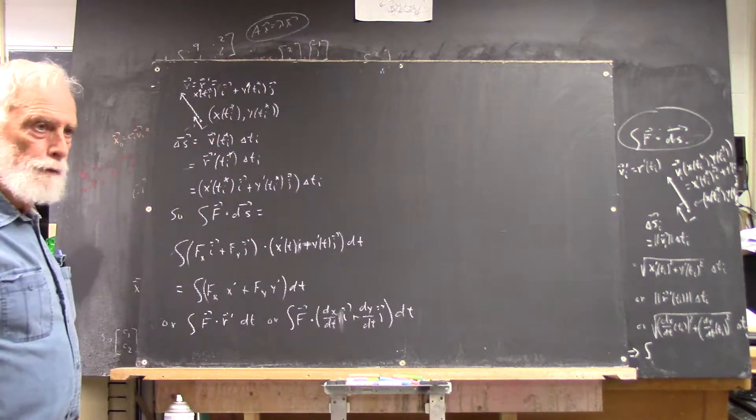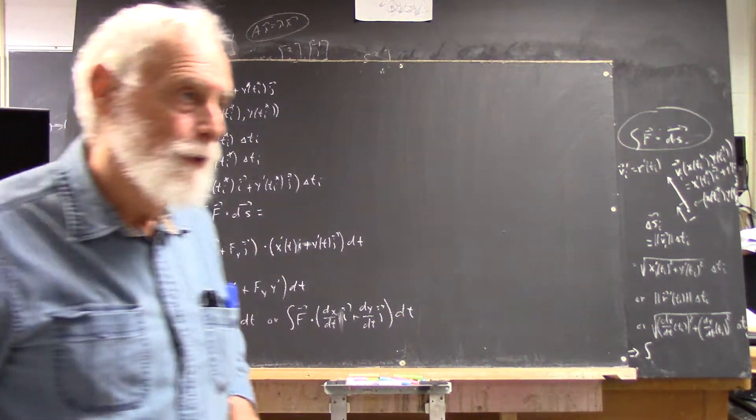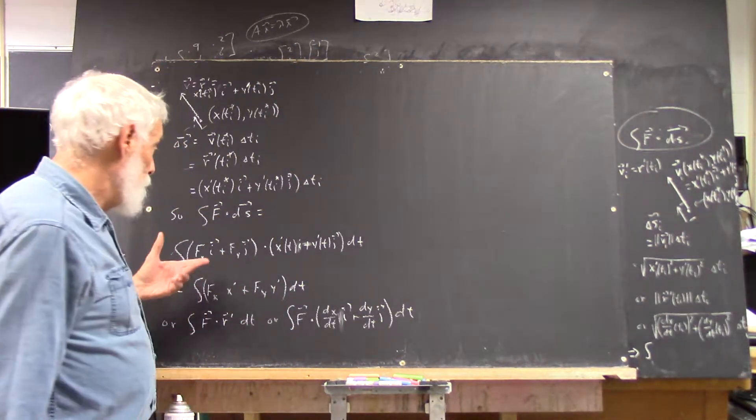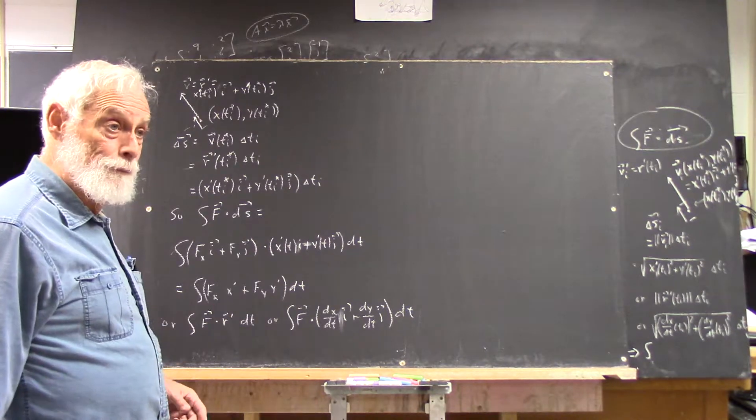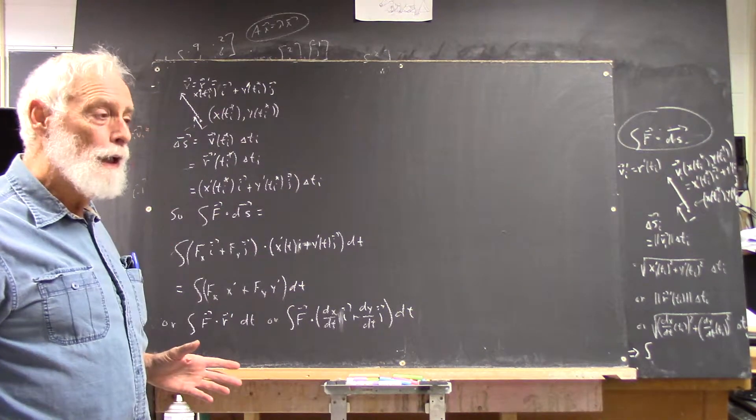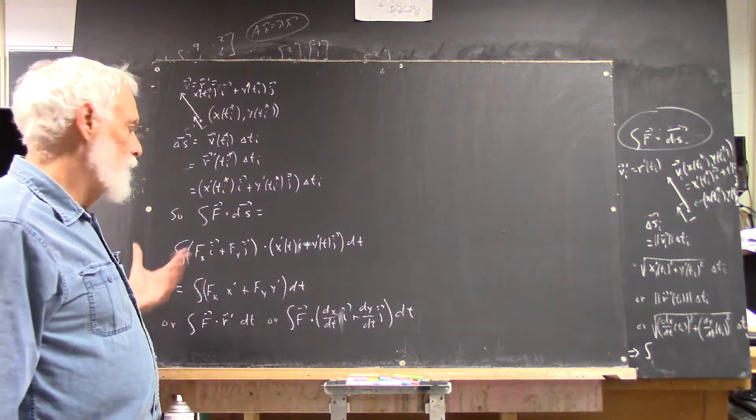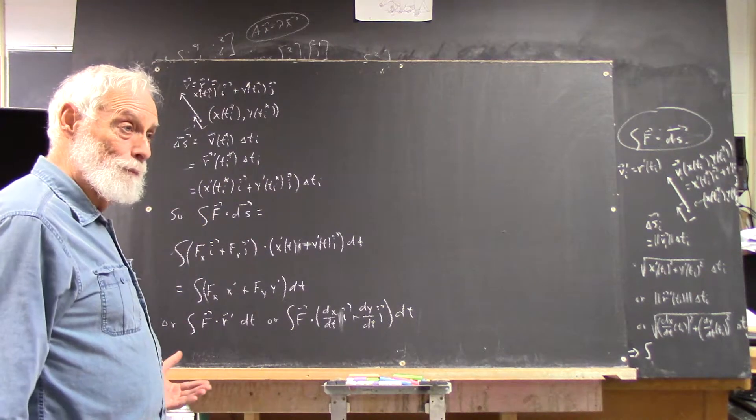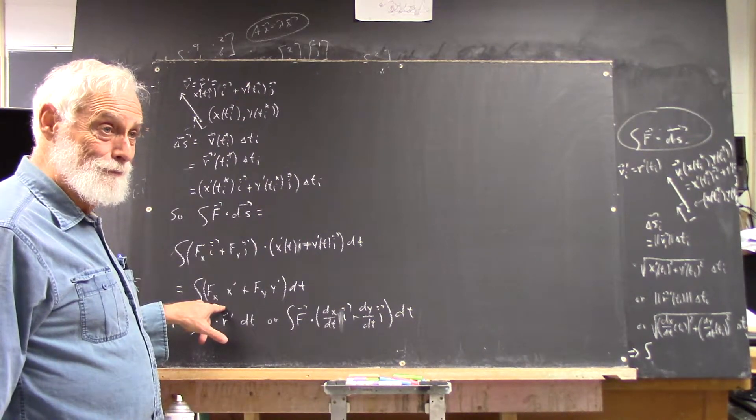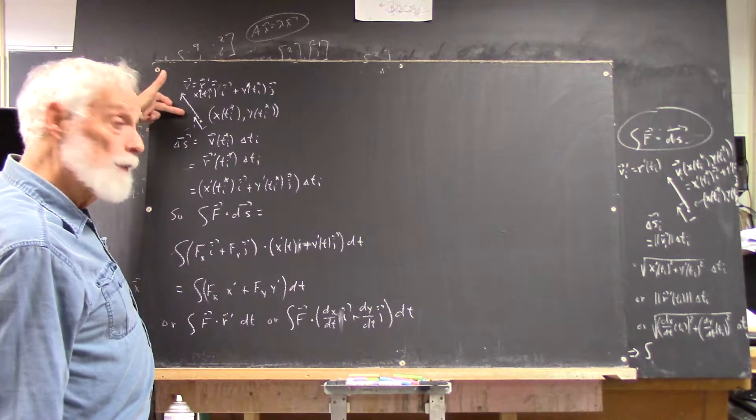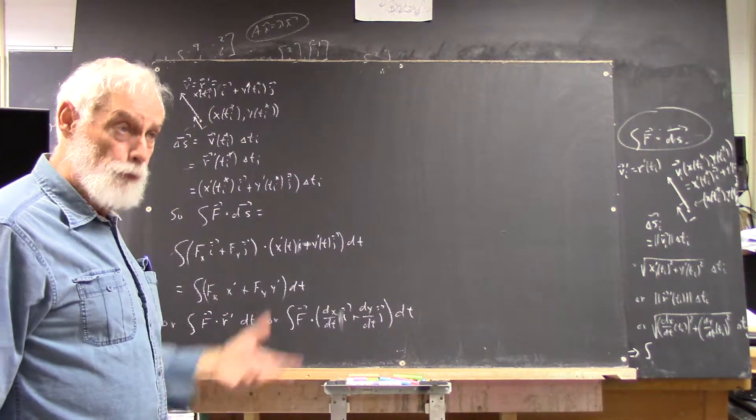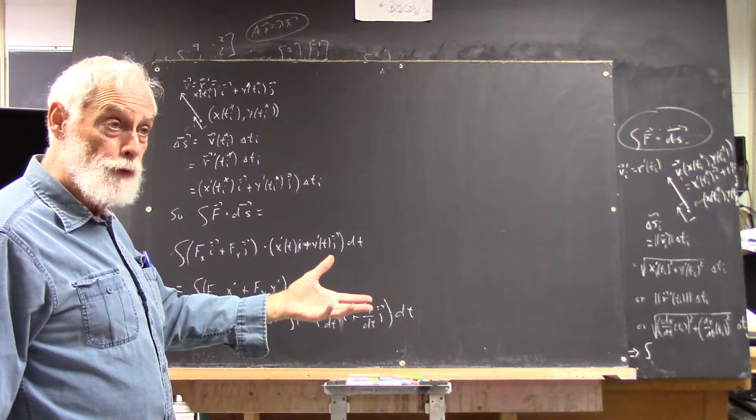And then any number of other notations, but if you have your parameterization, it's very straightforward. And what I don't want you to do, if you can possibly avoid it, is shortcut the whole picture by memorizing a formula. Because the picture is very straightforward. If you know the picture, you can get the formula. If you can reason out the picture, you can reason out the formula.